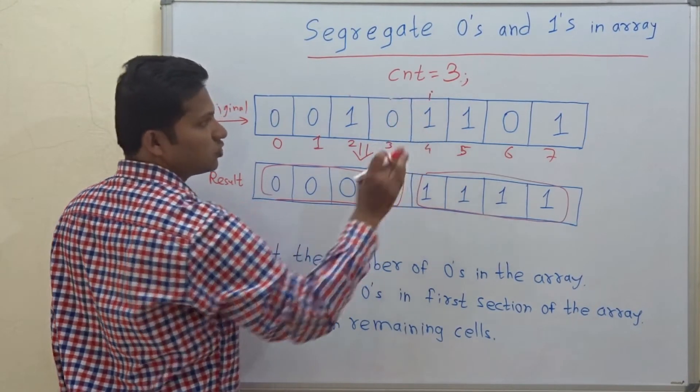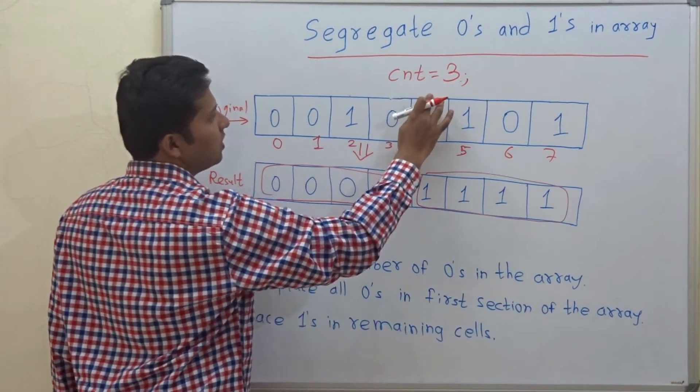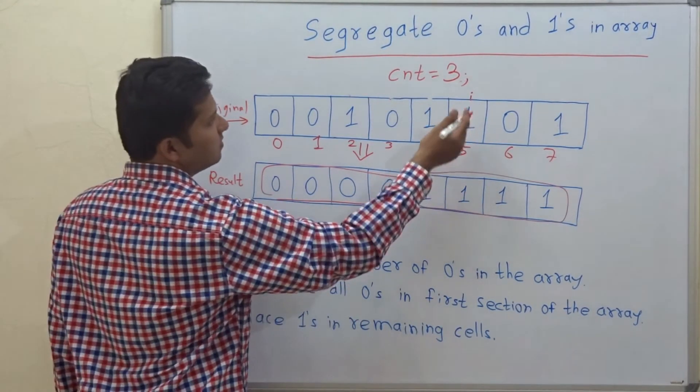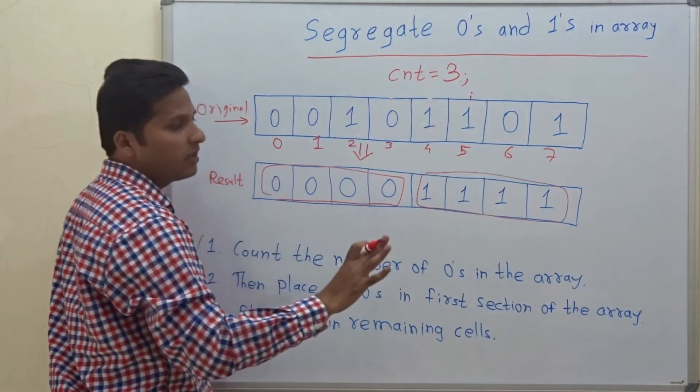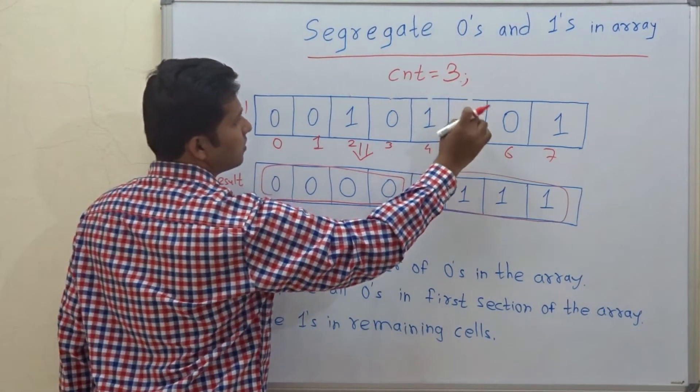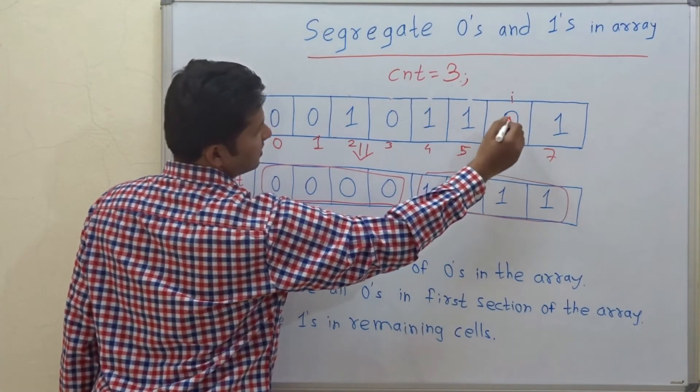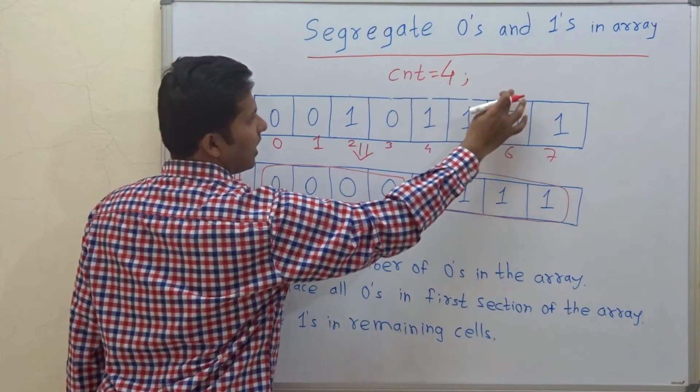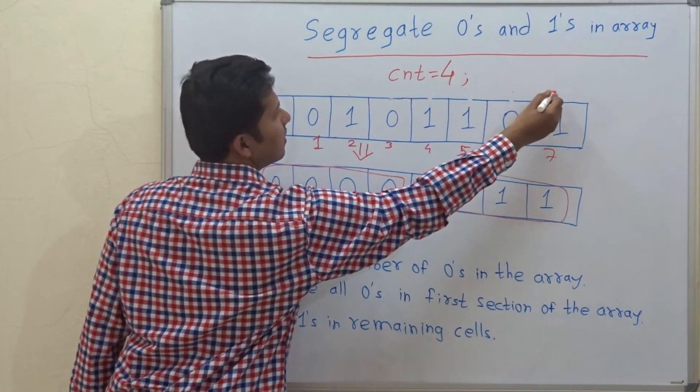It is 1. So not incrementing the counter. Only increment i. Again it is 1. So not incrementing the counter. You have to only increment i. Yes. This is 0. So increment the counter and increment i as well.